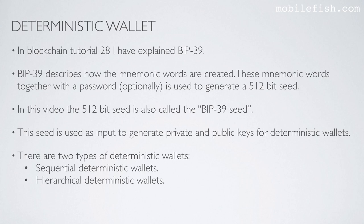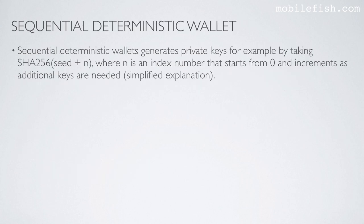There are two types of deterministic wallets: sequential deterministic wallets and hierarchical deterministic wallets. Sequential deterministic wallets generate private keys, for example by taking SHA-256 over the seed plus n, where n is an index number that starts from 0 and increments as additional keys are needed. This is the simplified explanation.